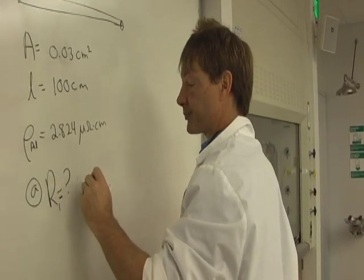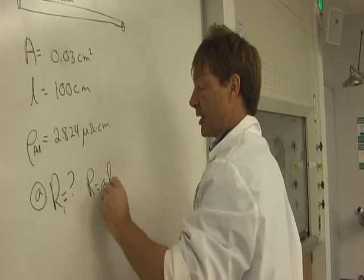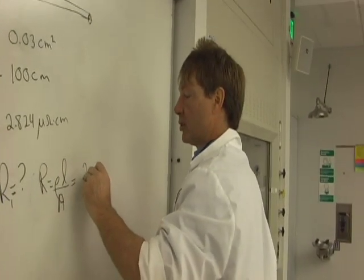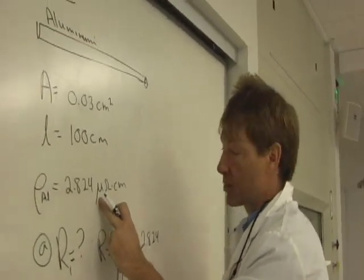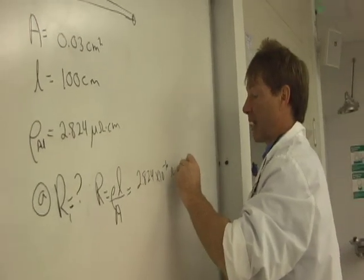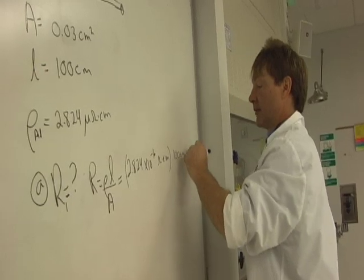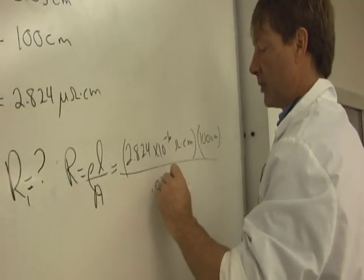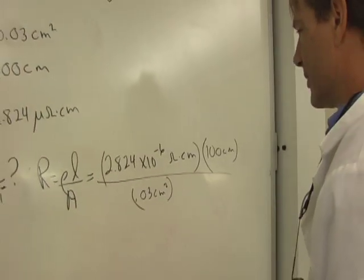Resistance is resistivity times length over area, which is going to be 2.824. Now, micro means times 10 to the minus 6. I'm just going to write times 10 to the minus 6 ohms times centimeters, times the length, which is 100 centimeters, divided by 0.03 centimeters squared, the area. That's going to be about...